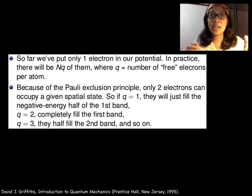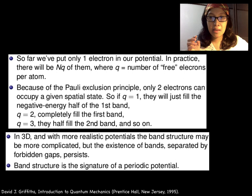As a result of Pauli's exclusion principle, only two electrons can occupy a given state. If q equals 1, the electrons occupy half of the first band. If q equals 2, the electrons completely fill the first band. If q equals 3, they half fill the second band.